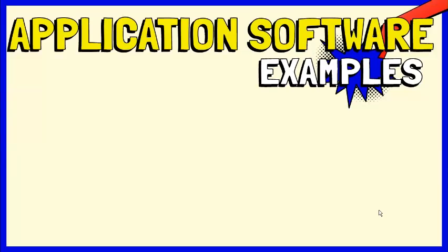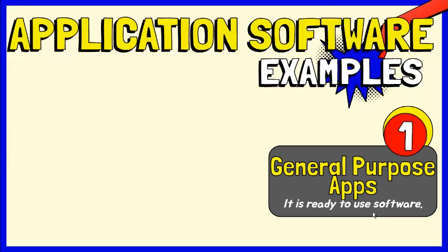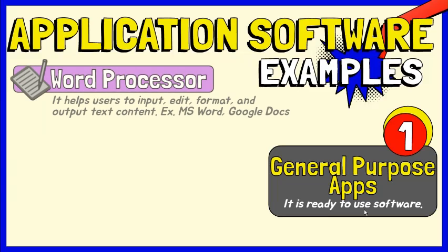There are two classifications under application software. First, general purpose application software. These are types of application software that are ready to use and are created by a company or an individual. Word processors help users to input, edit, format, and output text content. Microsoft Word and Google Docs are some examples.